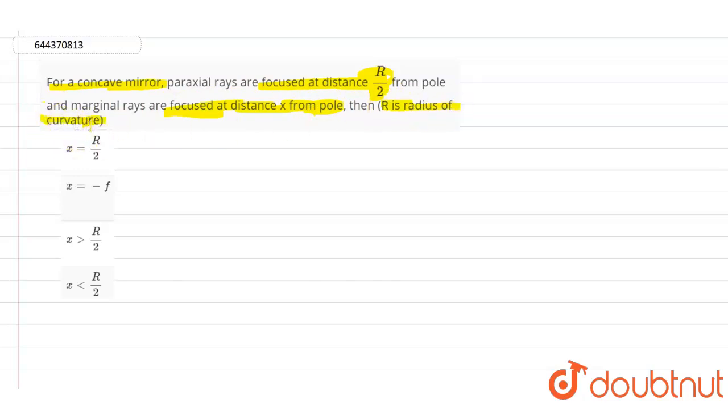As said in the question, the paraxial rays are focused at distance r divided by 2, and marginal rays are focused at x distance. We know that the focus is given by f equals r divided by 2.